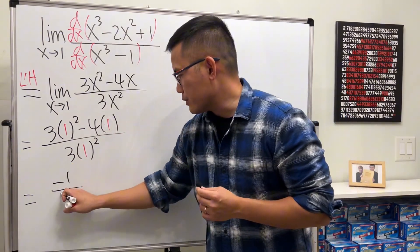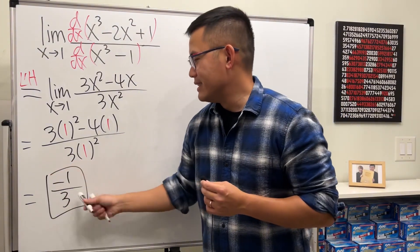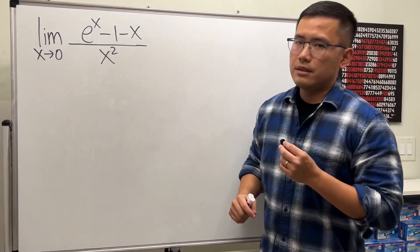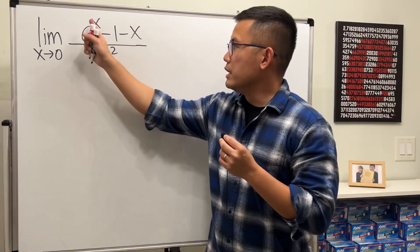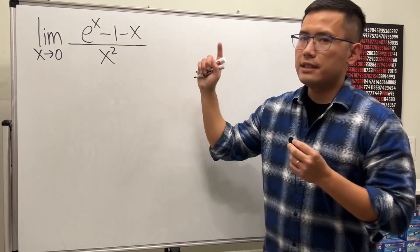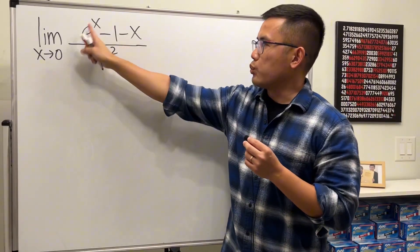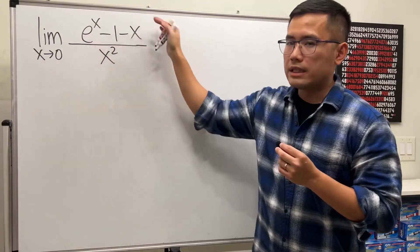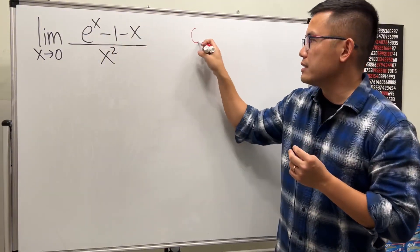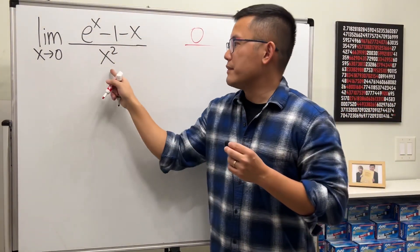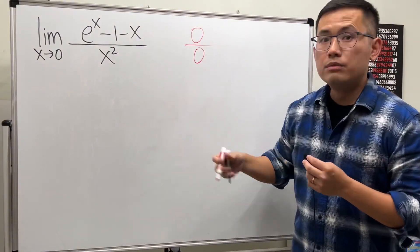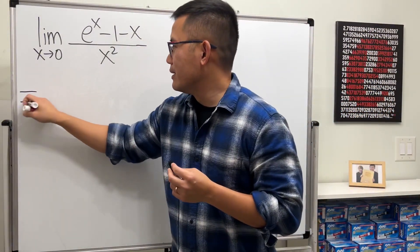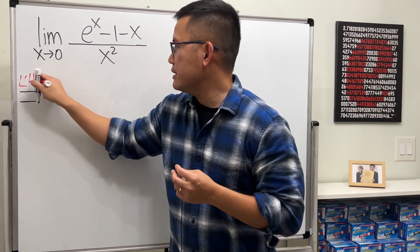That gives us 3 minus 4 over 3, which is negative one third. Done. Here's another limit — let's go ahead and plug in zero into all the x's. e to the 0 is 1, 1 minus 1 is 0, and then minus 0 on the top, we get zero. On the bottom we have zero squared, which is of course zero, so we can use L'Hôpital's Rule.